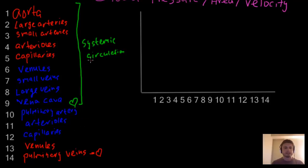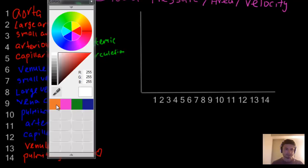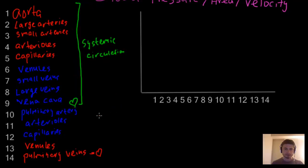It's important to understand that both pressure and velocity change throughout this journey of the blood. I've labeled each area on the diagram. Starting with pressure, shown in orange: pressure is highest in the heart, the aorta, and the large arteries. It varies a little in that region but it's consistently high.